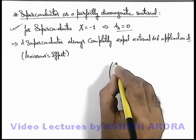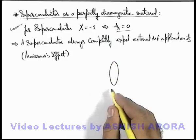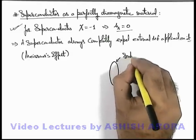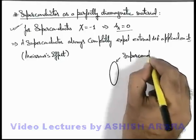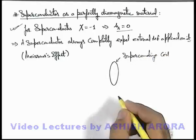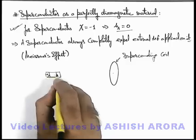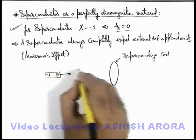If we consider a demonstration in which we are having a superconducting ring, this is a superconducting coil or a ring, and in this situation say if a magnet is brought close to it...